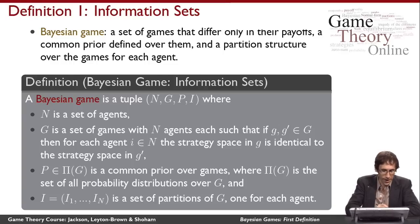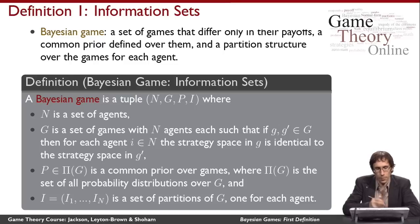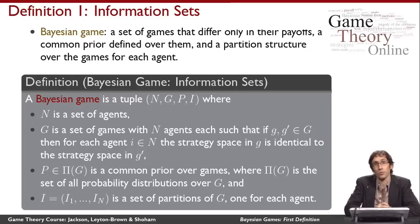Finally, we have a set of partitions of G, one for each agent. This is a set of equivalence classes that says, from the point of view of an agent, certain games are indistinguishable from each other and others are not.